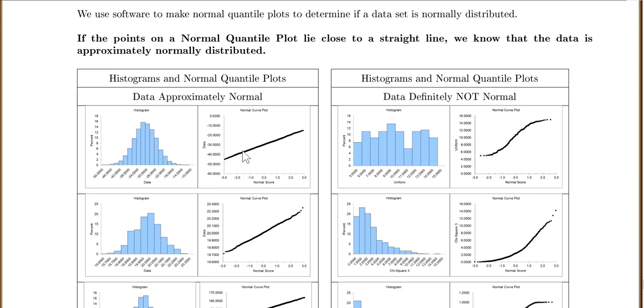So if the points on the normal quantile plot lie close to a straight line, because it's comparing it to a normal distribution, so they line up in a straight line, we know that the data is approximately normally distributed.